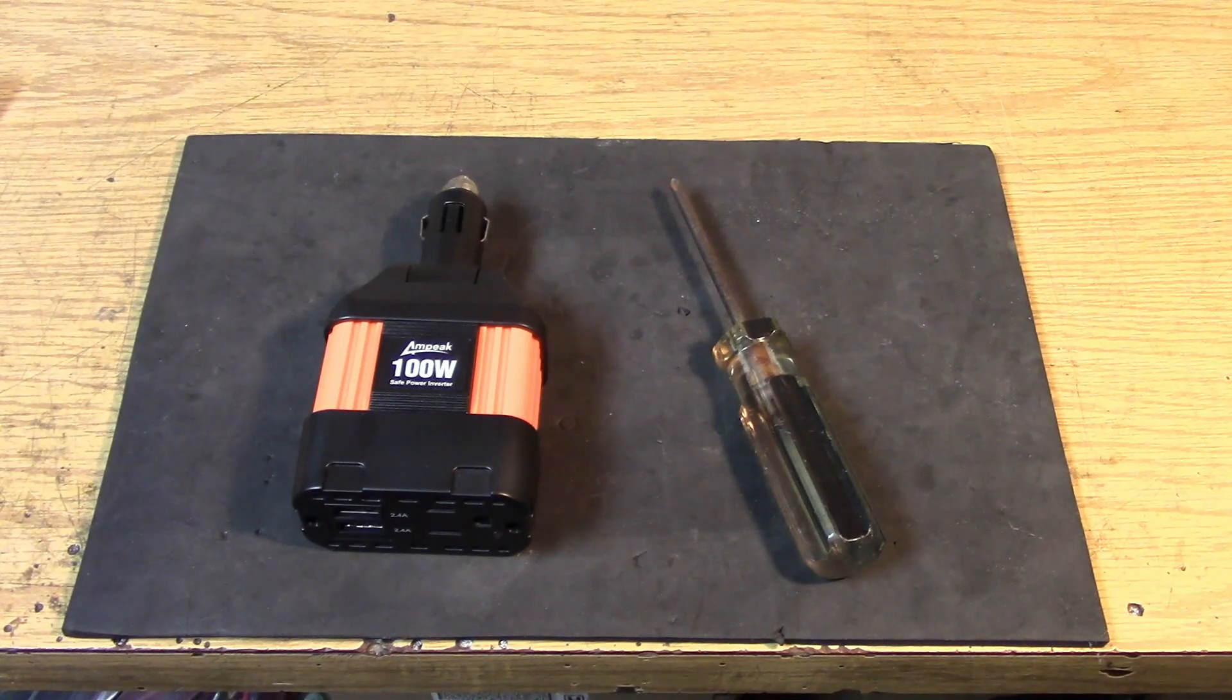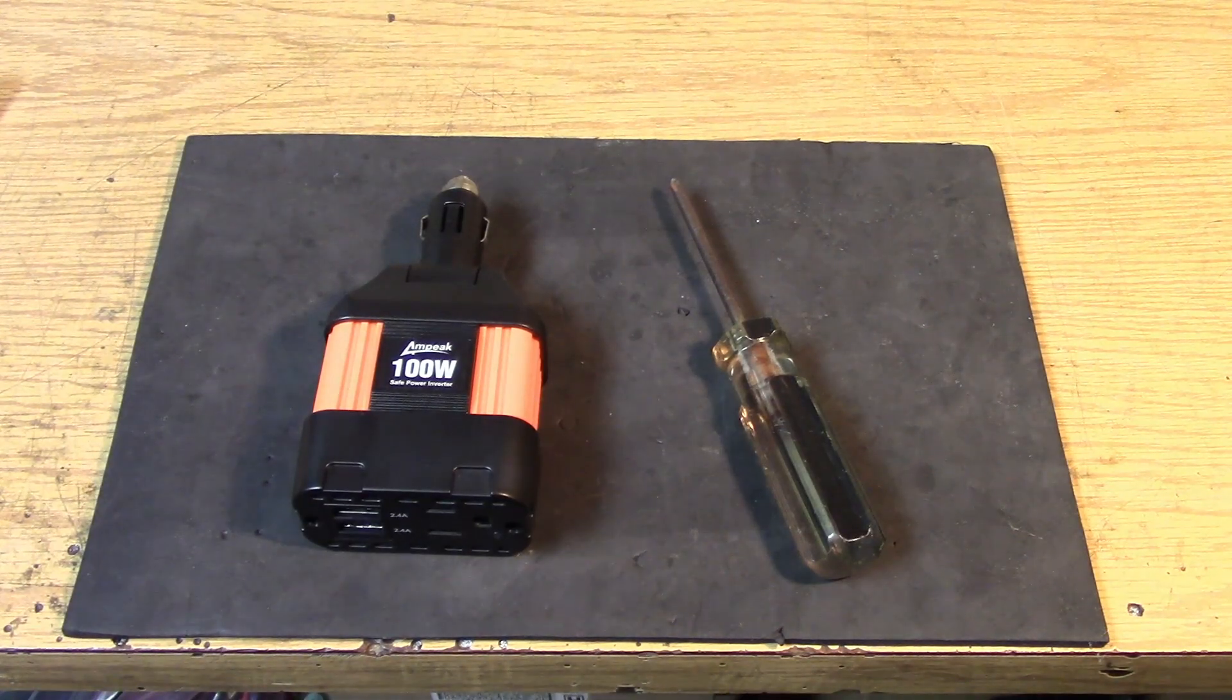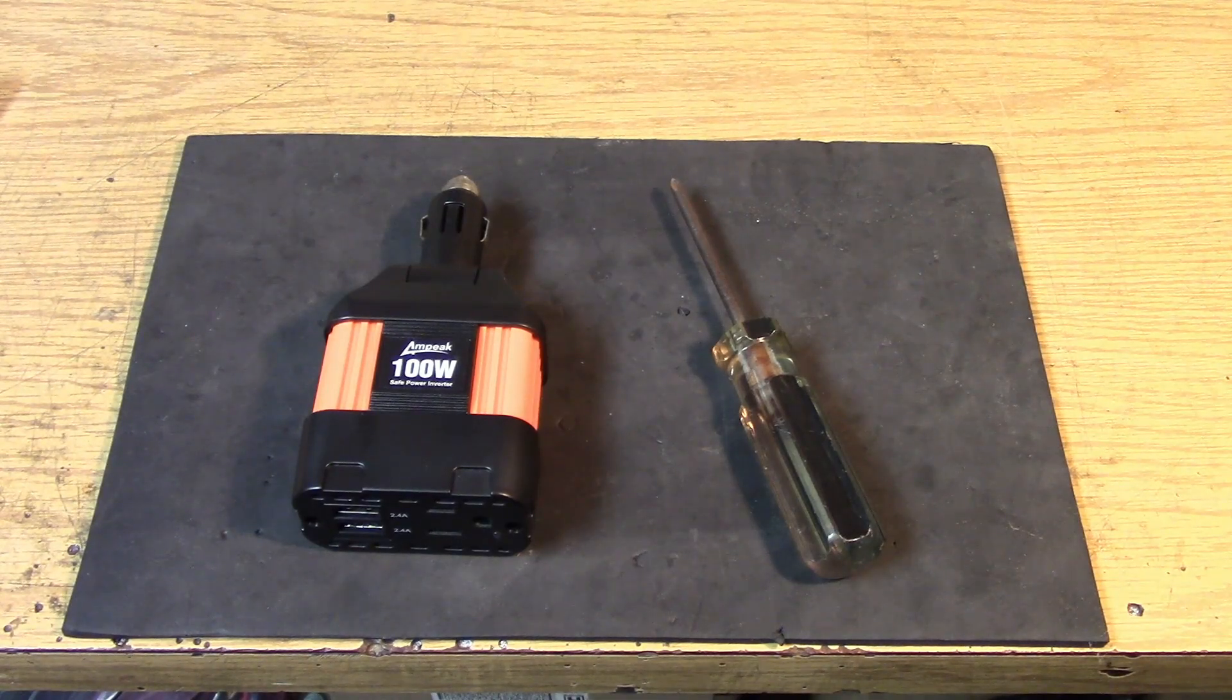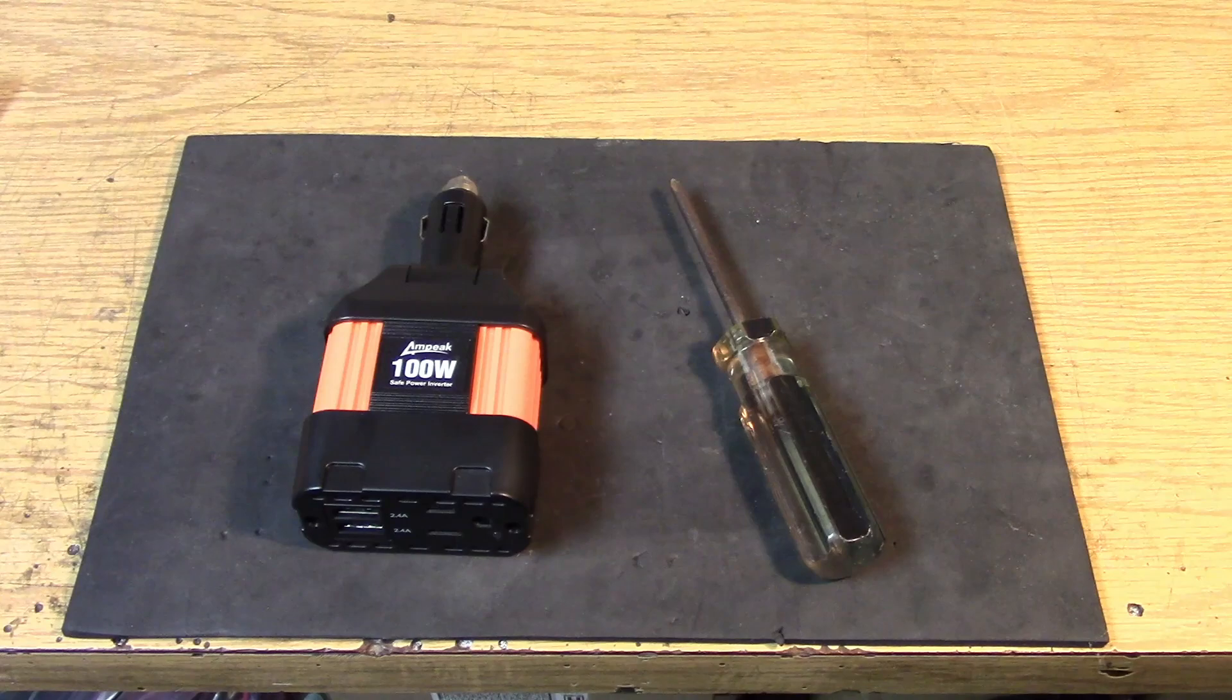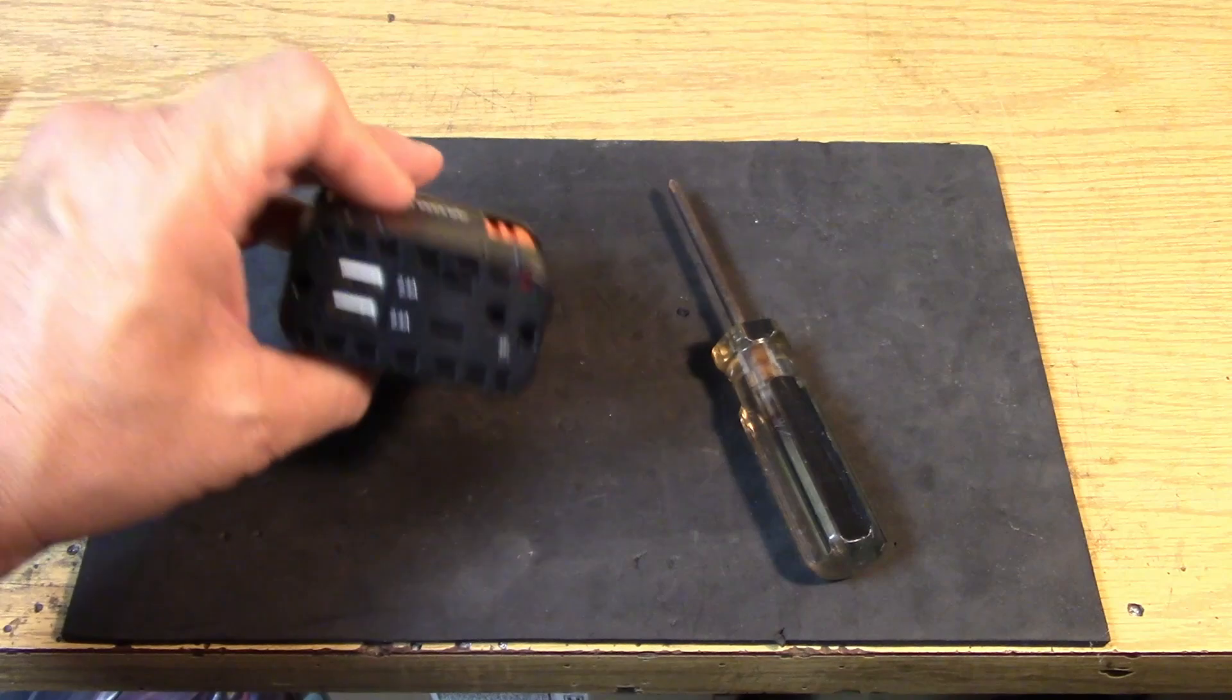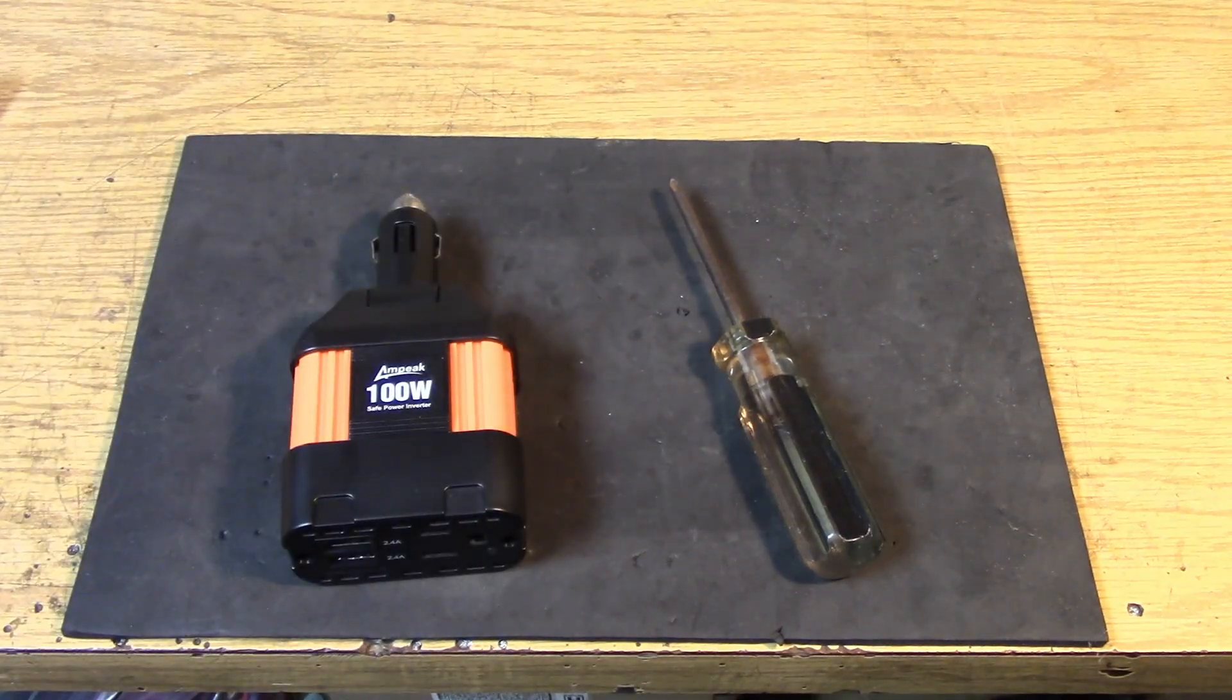Also, this one had pretty good efficiency specifications. Now, the efficiency is not going to be anywhere near as good as a proper DC to DC converter. Also, it had the AC output and a pair of DC outputs. Let's open this thing up and see what we have inside.